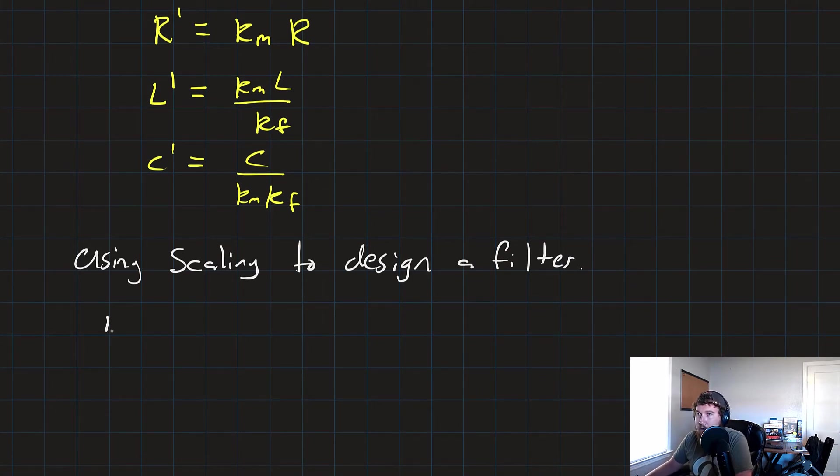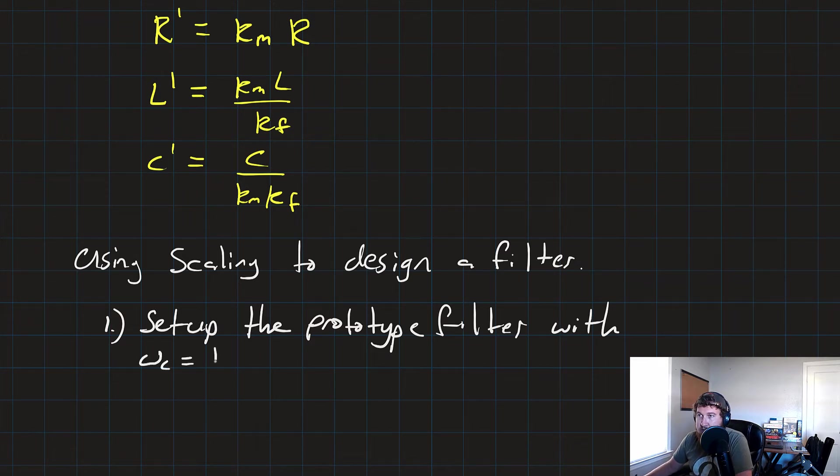We're going to set up the prototype filter with a center or cutoff frequency equals 1 radian per second. And all of our values are 1, R1 is equal to 1, R2 is equal to 1 ohm.